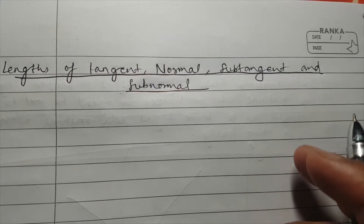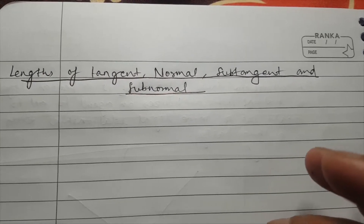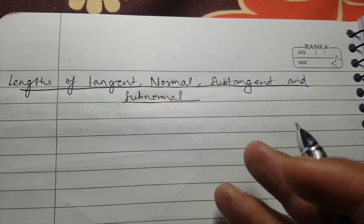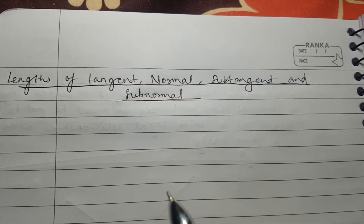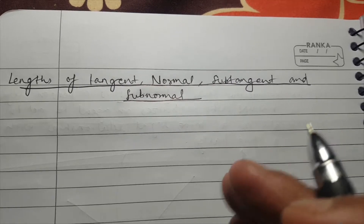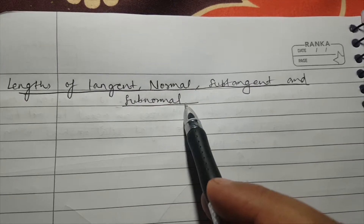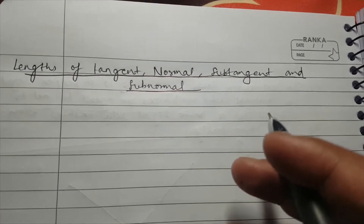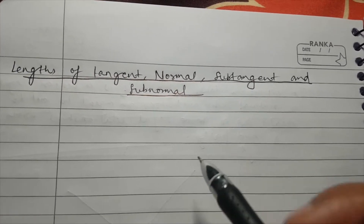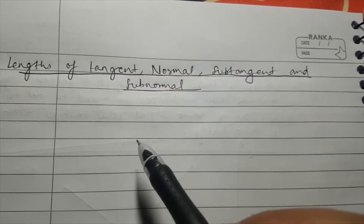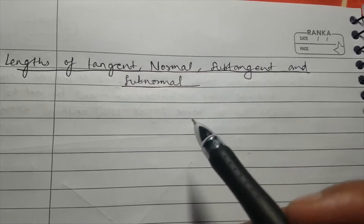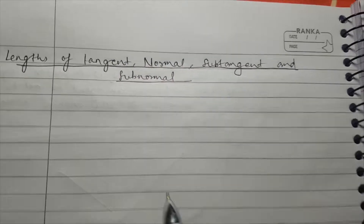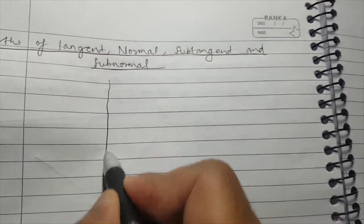Hello guys, today we are going to talk about: given a graph, if you draw a tangent and a normal to it, what are the lengths of the tangent, normal, sub-tangent, and sub-normal? For that, first of all I will tell you what the sub-tangent and sub-normal are when you draw a tangent and normal.